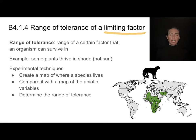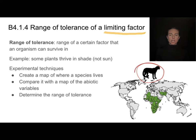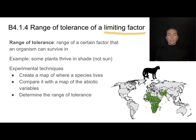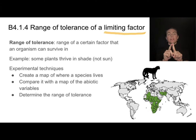For animals, we can talk about temperature tolerance; for plants, some will thrive in shade and not in sun. To find these ranges, you first make a map of where a species lives, then overlay that with a map of abiotic variables — looking for similar patterns in rainfall, temperature, or sunlight. This helps determine the range of tolerance for that species by cross-referencing where it actually lives with the abiotic variables.